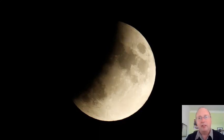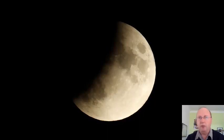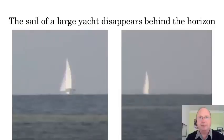Today we know that the Earth is the shape of a ball from photos from satellites, as shown. Also, when there is a lunar eclipse, the Earth's shadow casts a curved shadow on the Moon. There is also the fact that the hull of a sailing ship or yacht disappears first as the boat goes further away and disappears behind the horizon.